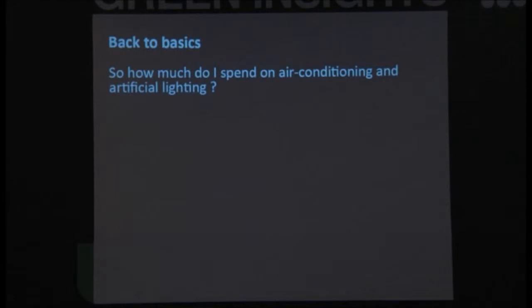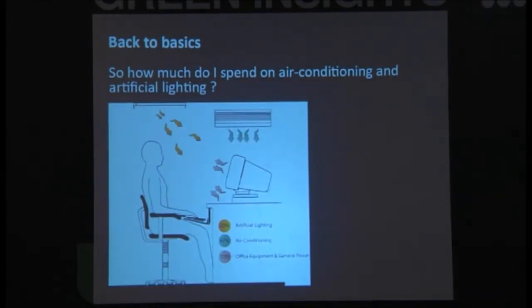So how much do we spend on air conditioning and artificial lighting? Artificial lighting in a typical commercial office accounts for about 23%. Air conditioning, 67%. General equipment, about 10%. So air conditioning is the biggest contributor to our electricity bill.